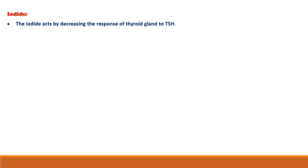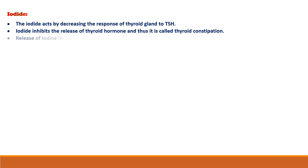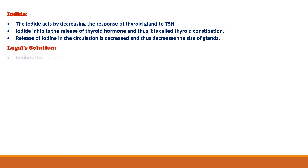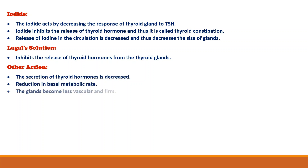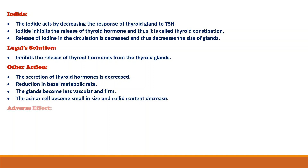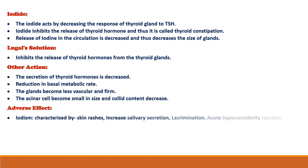Iodide acts by decreasing the response of the thyroid gland to TSH. Iodide inhibits the release of thyroid hormone and thus it is called thyroid constipation. Release of iodine in the circulation is decreased, thus decreasing the size of the gland. Lugol's solution inhibits the release of thyroid hormones from the thyroid gland. Other actions include: decreased secretion of thyroid hormones, reduction in basal metabolic rate, glands become less vascular and firm, the follicular cells become small in size, and colloid content decreases. Adverse effects include iodism, characterized by skin rashes, increased salivary secretion, lacrimation, and acute hypersensitivity reactions.